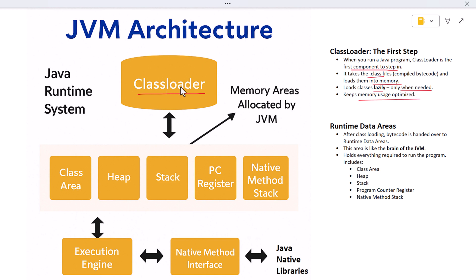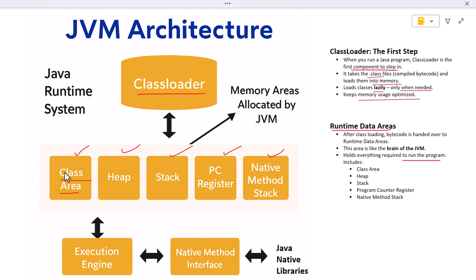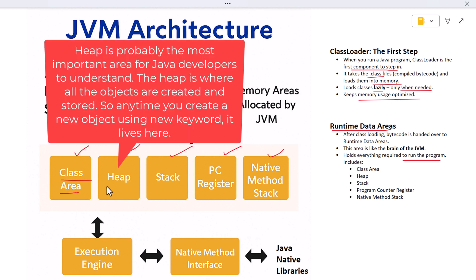Once the class loader finishes loading classes, that bytecode is handed over to something called the runtime data areas. This area is like the brain of the JVM — it holds everything required to run the program, including the class area, heap, stack, program counter register, and the native method stack. The class area is where metadata is stored, including class names, method names, field names, and the runtime constant pool. If you imagine each class has a blueprint, the class area keeps all of those blueprints ready for use.